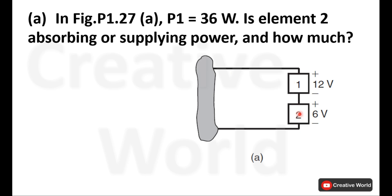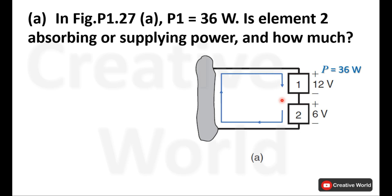We can calculate the power of element 2 after knowing the current through element 1. Power across element 1 is 36 watts and it is absorbing power due to its positive magnitude. We know that if any element is absorbing power, the current will pass through its positive terminal and leave through its negative terminal. So current will be entering from the positive terminal of element 1, leaving from its negative terminal, and similarly entering the positive terminal of element 2 and leaving from the negative terminal of element 2.